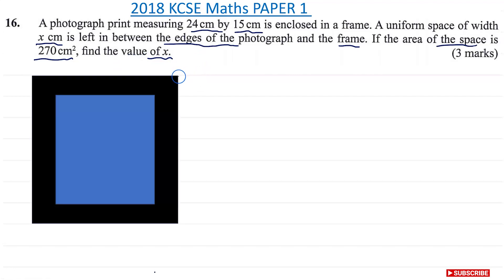So let me just show you what this may look like. The blue one is your photo, and then you have this black border and all this area is 270cm² because that's the area between the edges of the photograph and the frame. And the width in between these two is x cm. So similarly here is x cm all around.